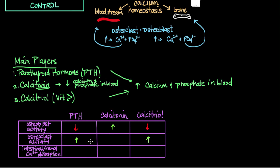Finally, for intestinal and renal calcium absorption: since parathyroid hormone leads to an increase in calcium and phosphate in the blood, we expect it to increase the ability of the intestines and kidneys to absorb calcium. Calcitriol has the same effect. Calcitonin, which tones down calcium in the blood, decreases the rate of calcium absorption via the intestines and kidneys.